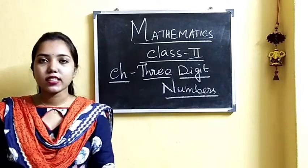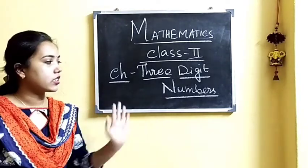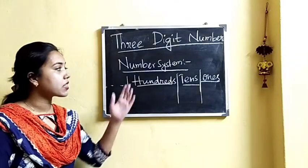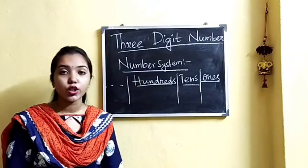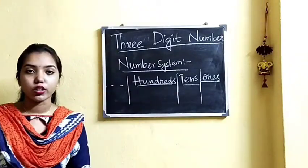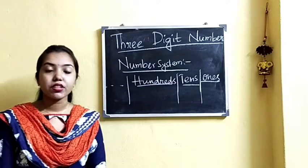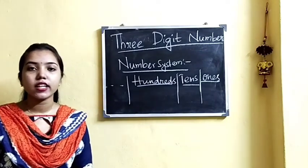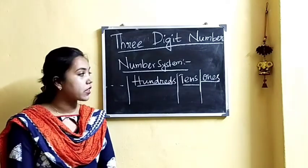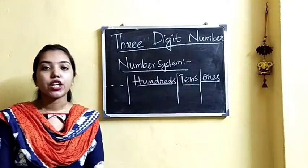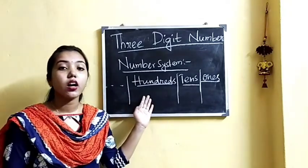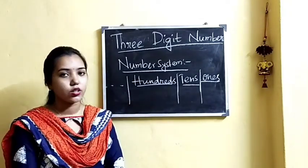In your maths class today we will learn about 3-digit numbers. You all know that the number system is based on groups like 1s, 10s, 100s and so on. In your previous class you learnt to write 1 and 2-digit numbers using 2 places — 1s and 10s. Now we will learn to write 3-digit numbers using the 100s place also.